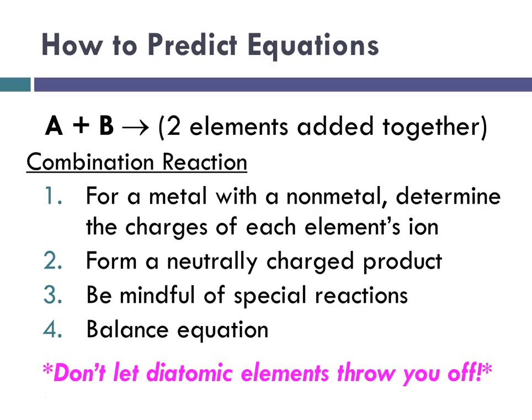You can find them on the periodic table if you remember that hydrogen's a weirdo off there on the upper left. And then if you can find nitrogen, oxygen, fluorine, chlorine, bromine, iodine, they form a seven on your periodic table, and they have to be written as diatomics.